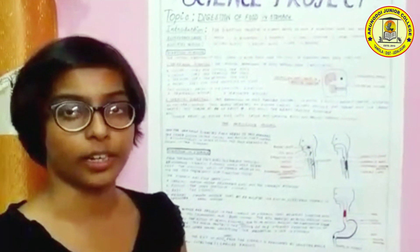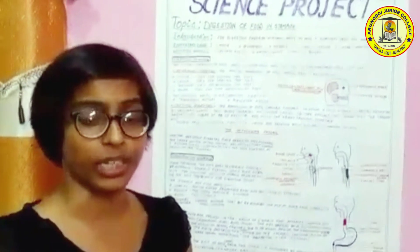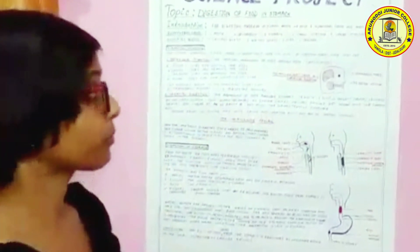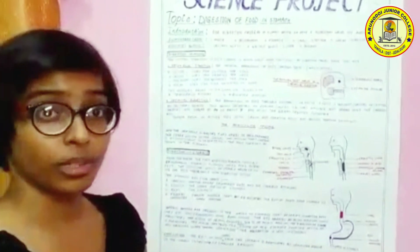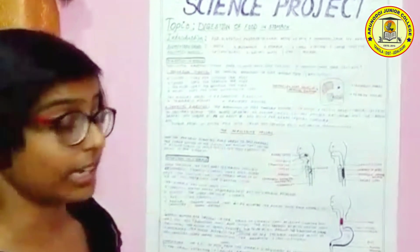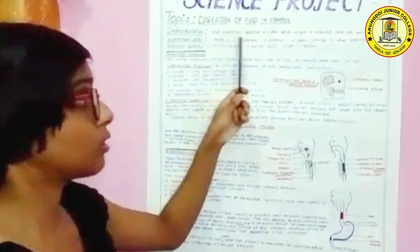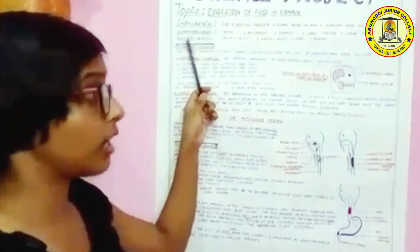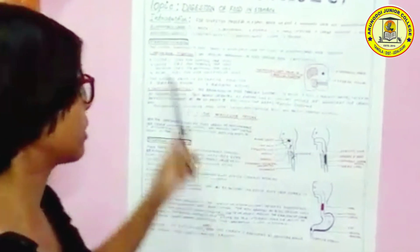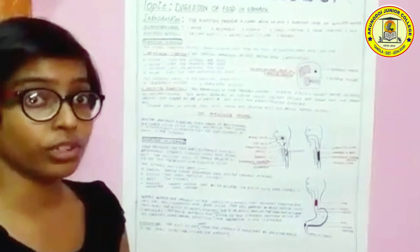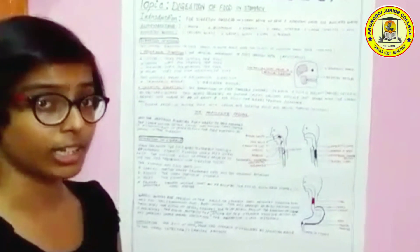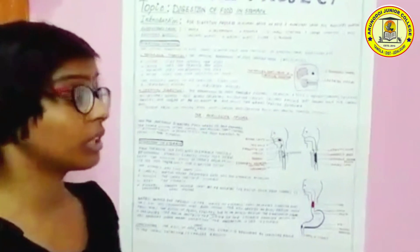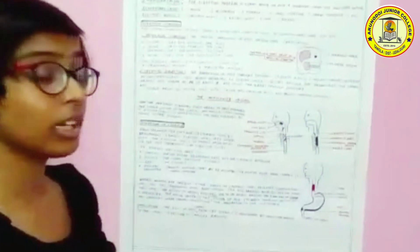I am Jupitra Saika from class 10, section JNG, roll number 28. Today I am going to explain my science project on the digestion of food in the stomach. For digestion in human beings we have an alimentary canal and associated glands. The alimentary canal consists of the mouth, oesophagus, stomach, small intestine, large intestine, and anus. The associated glands are the salivary gland, gastric gland, liver, and pancreas. Initial digestion of food takes place in the mouth, involving mechanical and chemical digestion.